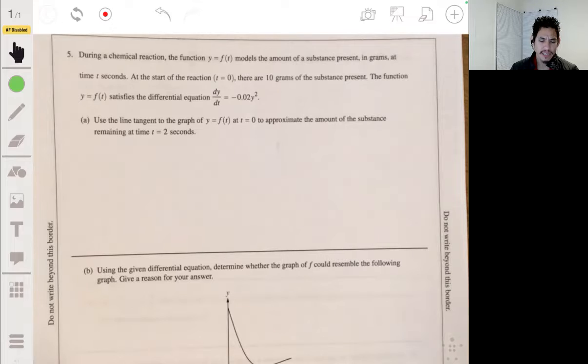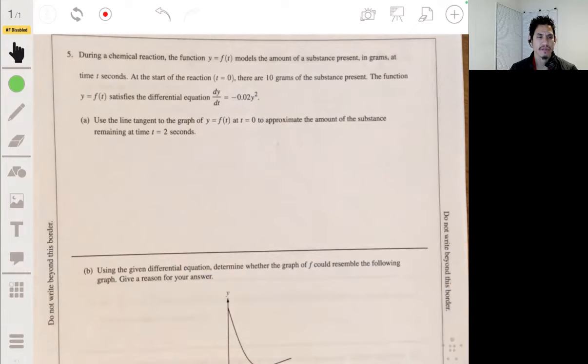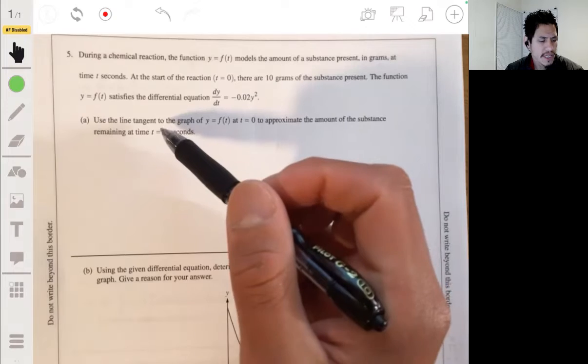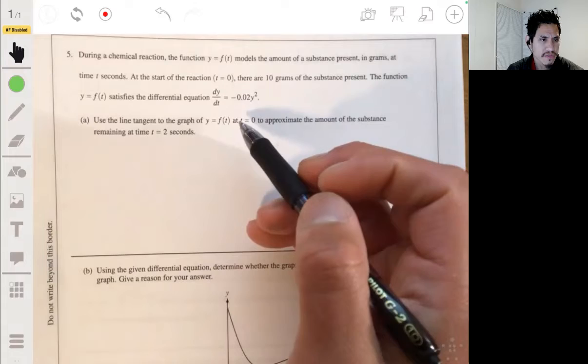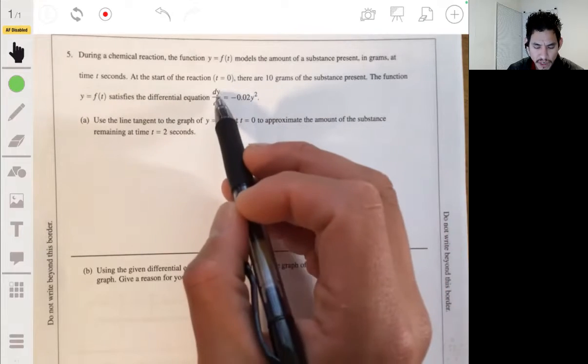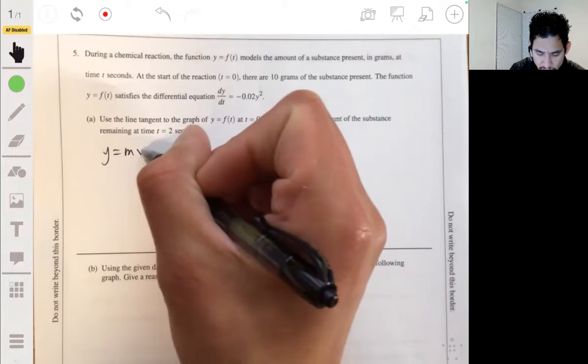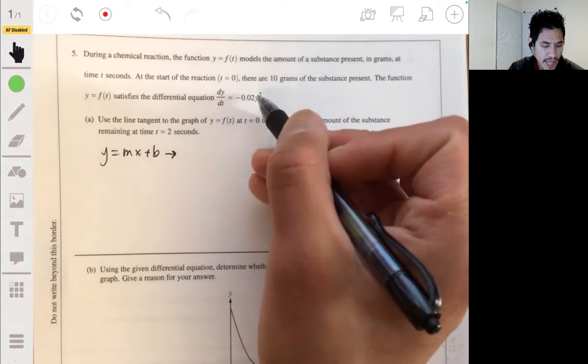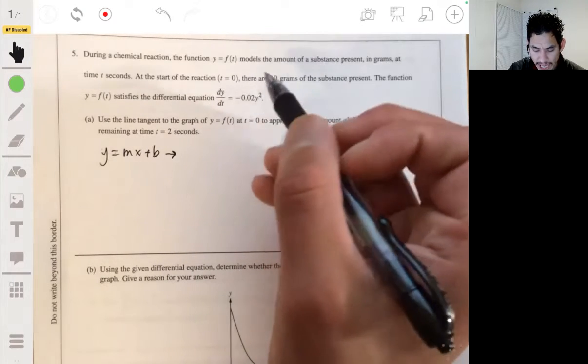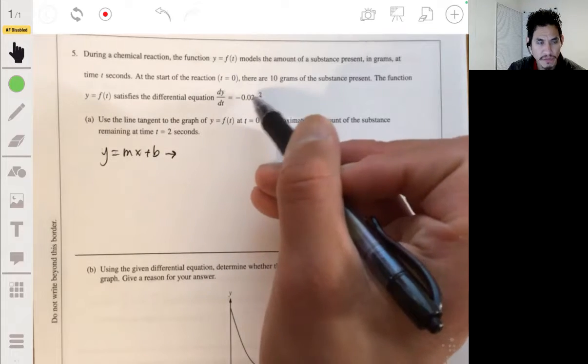Part A, let's use the line tangent to the graph of y equals f of t at t equals zero to approximate the amount of the substance remaining at time t equals two seconds. So you essentially want to find the equation of the tangent line and then plug in two. So let's find the equation of the tangent line at t equals zero. We start off by recognizing that this will be the slope of our tangent line.